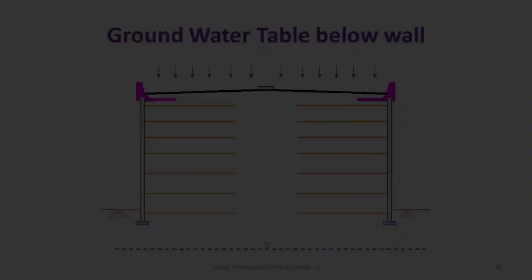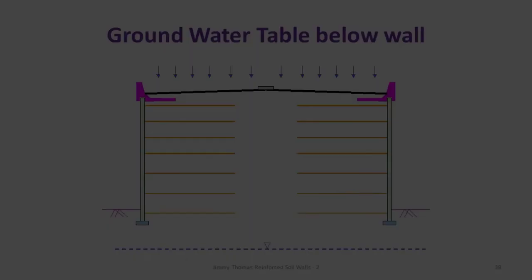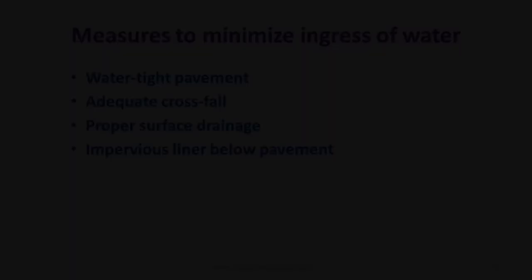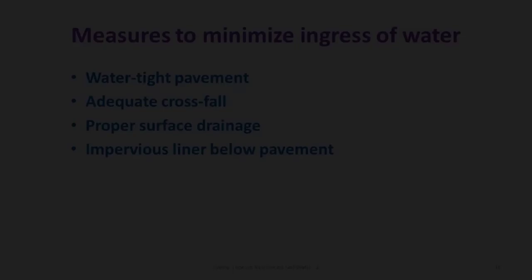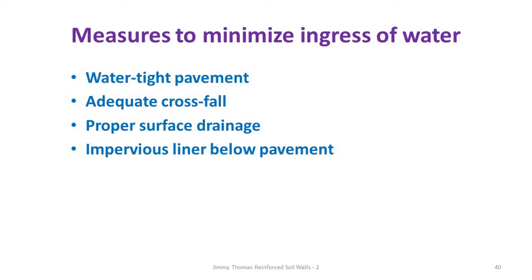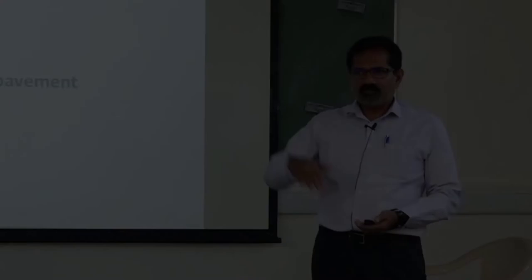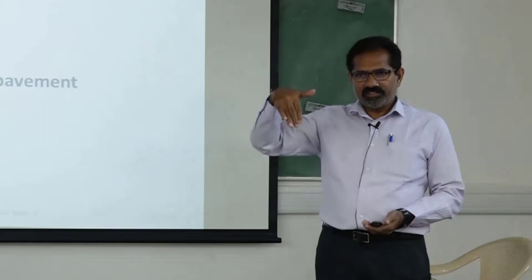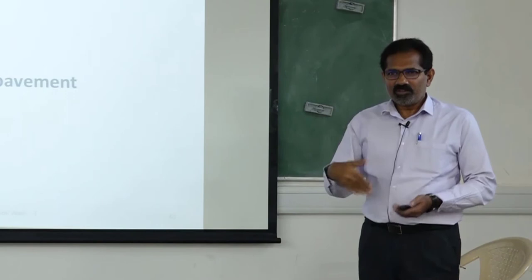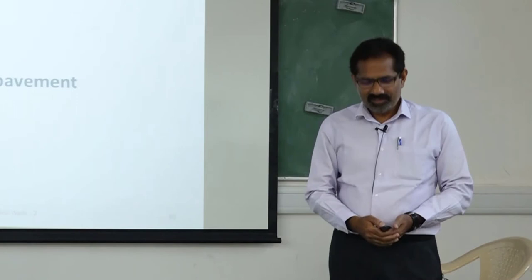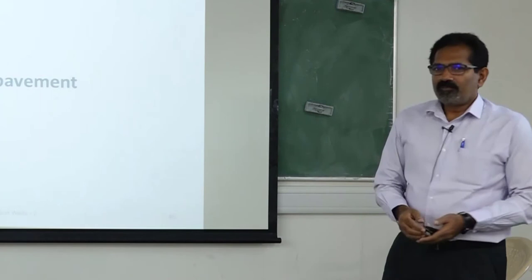One approach is to minimize water entry into the structure. Options include providing adequate camber, proper surface drainage, and using an impervious liner below the pavement so water doesn't reach the fill. However, when using an impervious layer, caution is needed to avoid pore pressure buildup. This is especially relevant when fine-grained or poorly draining backfills have to be used.